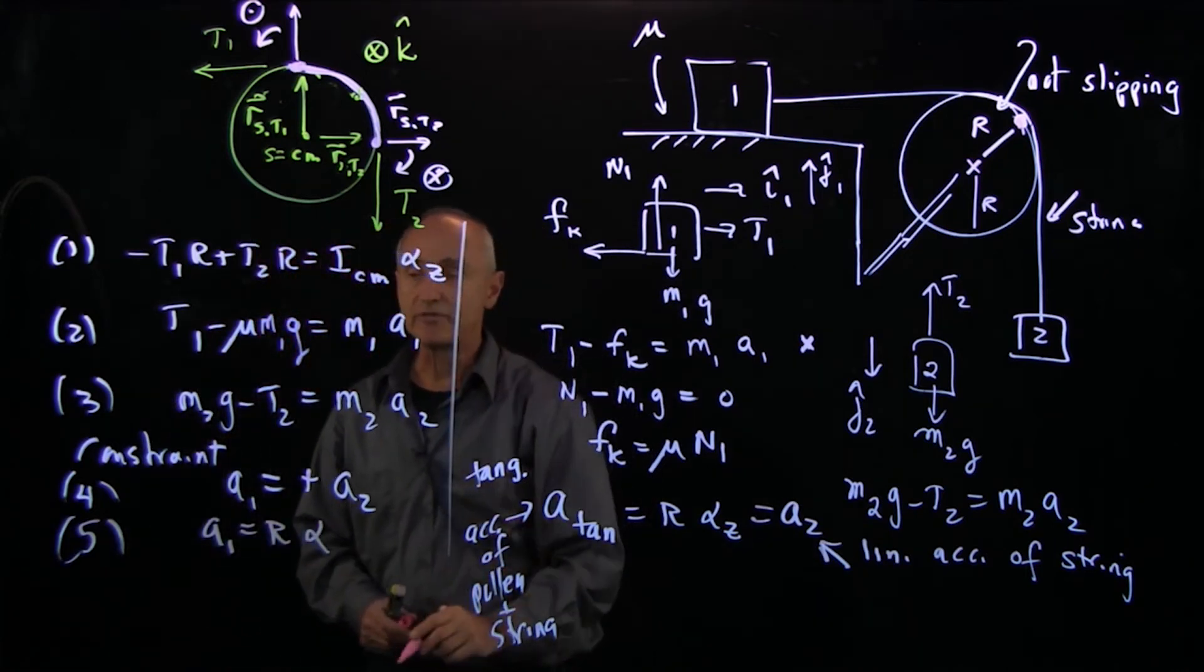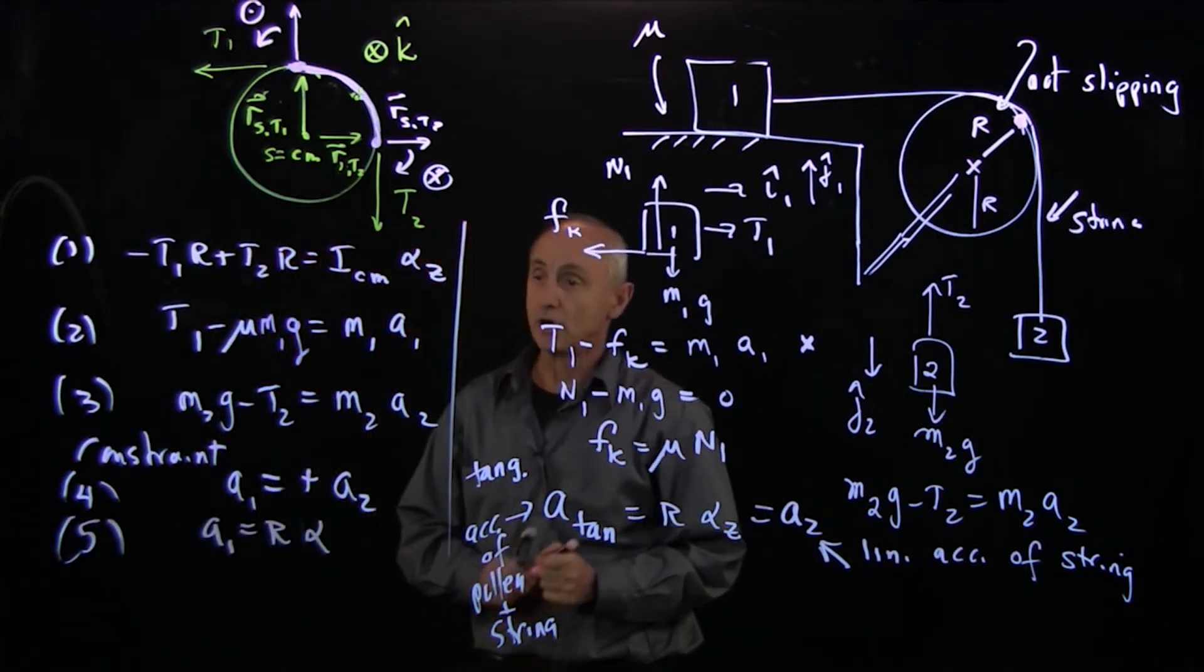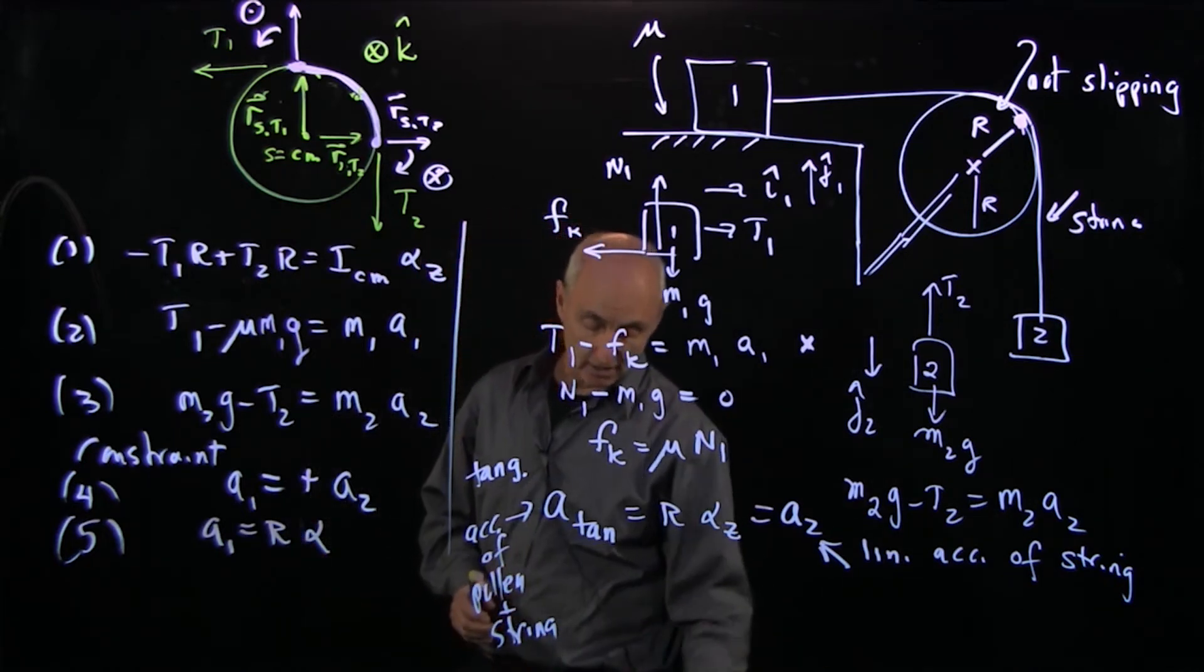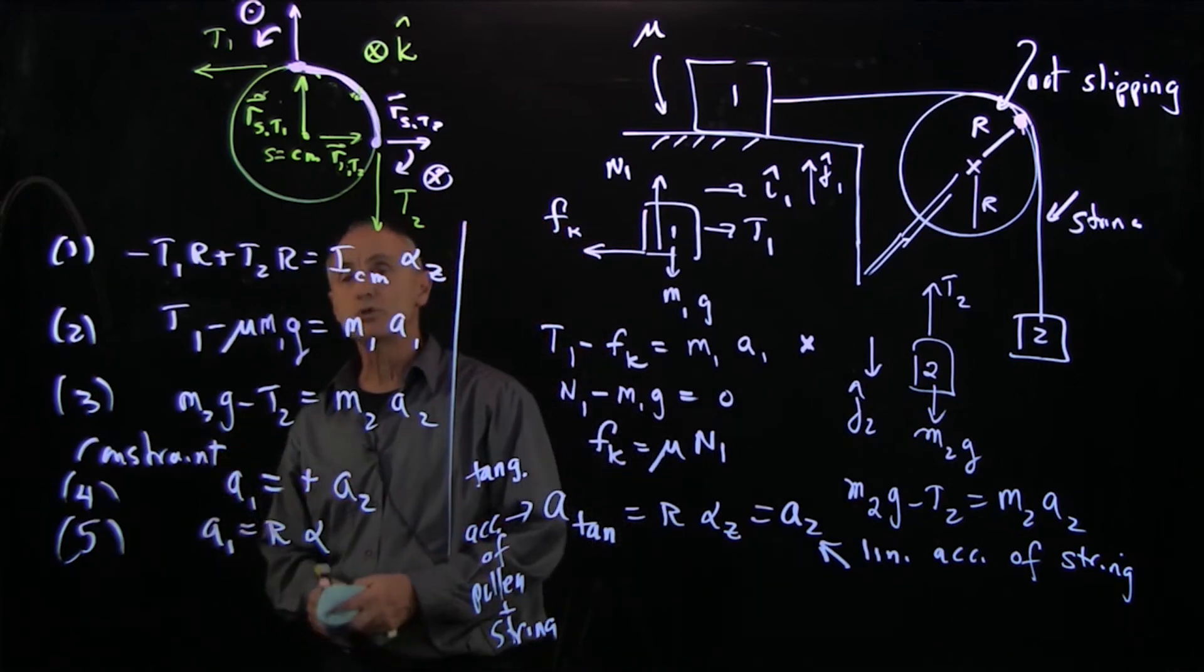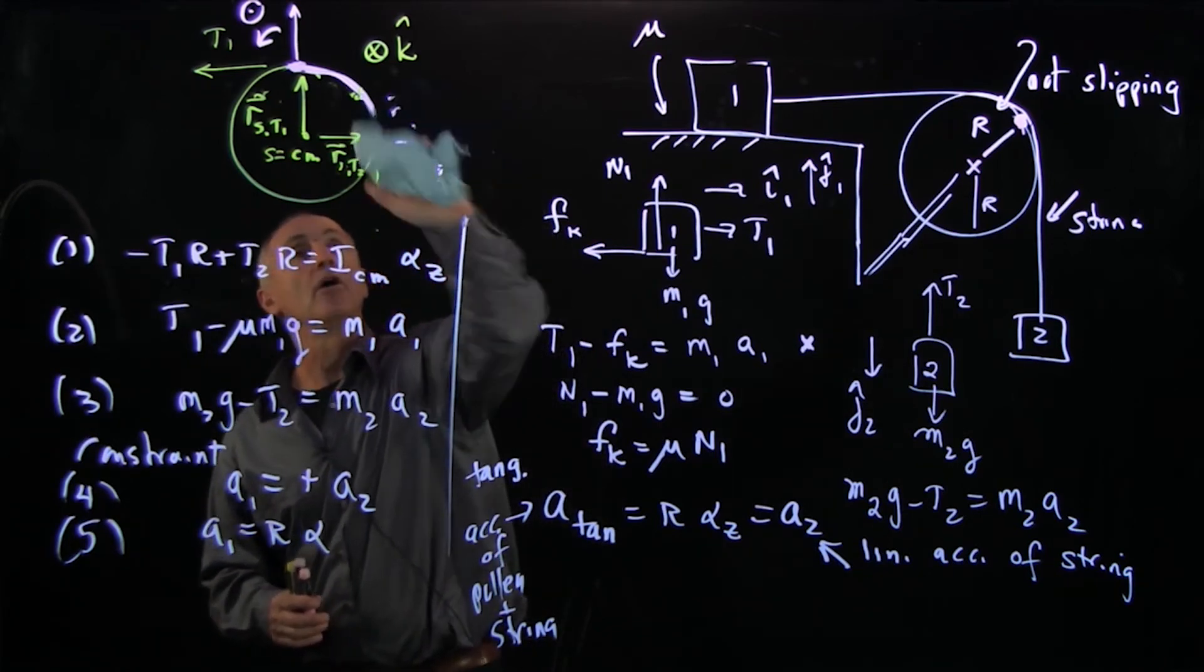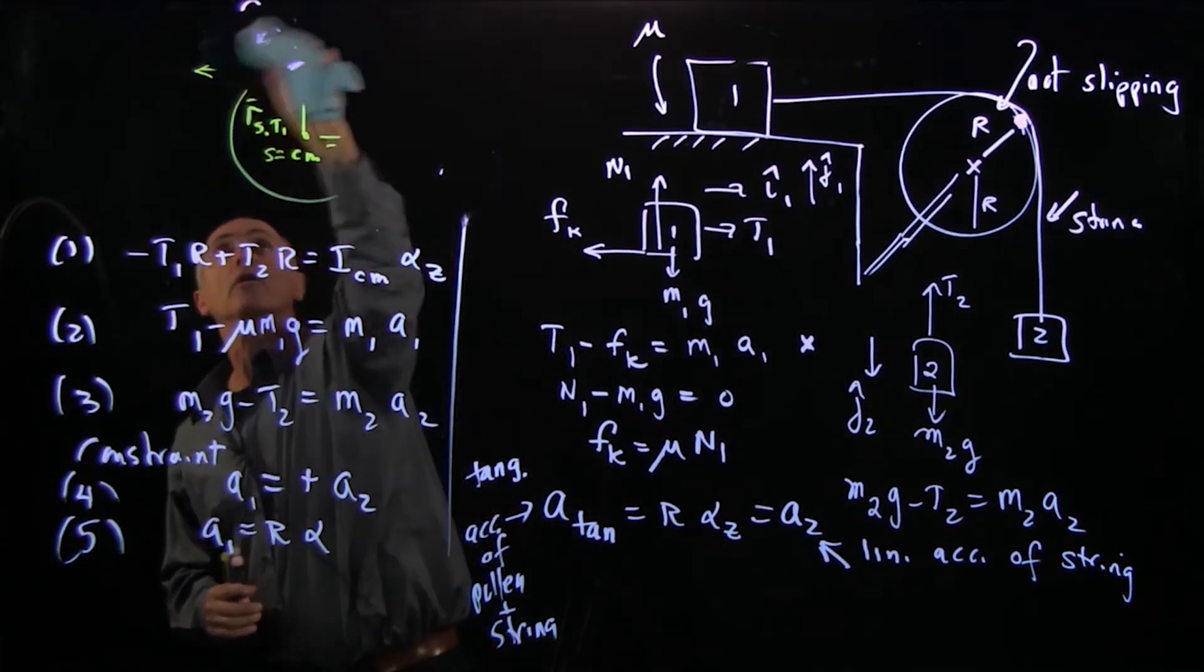And now I have a system of five equations and five unknowns. And the question is, how can I find the acceleration? So in general, when opposed to a system like that, I want to have some strategy. Let's make a little space to clear for our algebra.